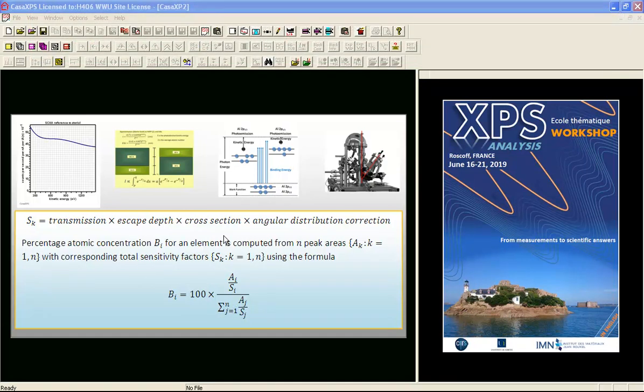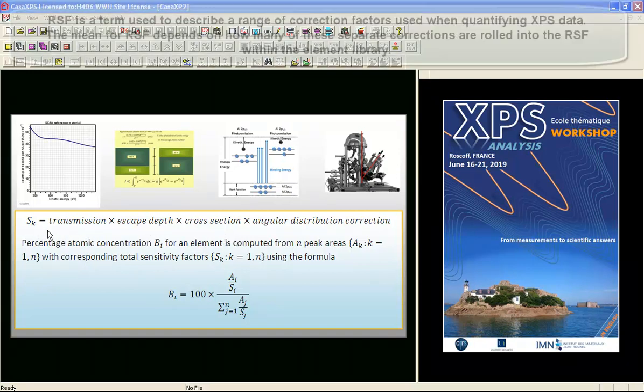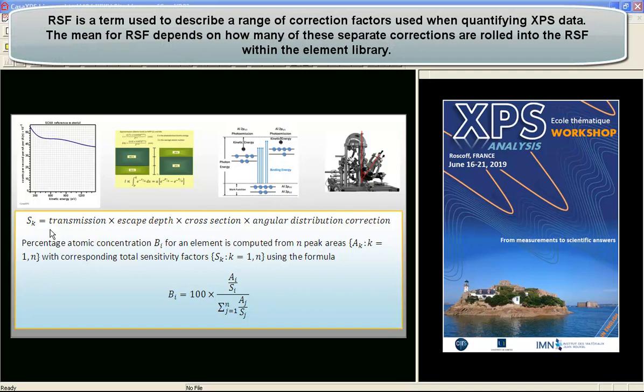An element library tabulates for each photo emission peak a sensitivity factor or relative sensitivity factor. In the case of Schofield, the library simply contains the cross section. Then we have to calculate the transmission function, the escape depth, and the angular distribution correction in order to perform this calculation of atomic concentration.